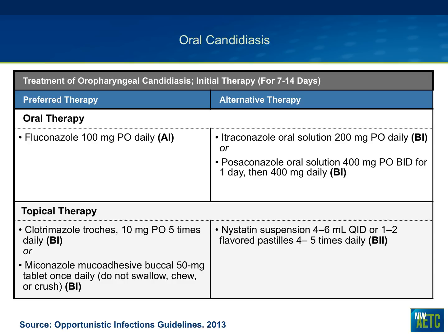In terms of therapy for oral candidiasis, the first-line therapy recommended in the opportunistic infection guidelines is once-daily fluconazole. Alternatives are itraconazole oral solution or posaconazole oral solution. Topical therapies can also be used — clotrimazole, miconazole, nystatin — but most guidelines and experts have moved towards just using fluconazole as first-line therapy. It used to be that we were very hesitant to overuse fluconazole because of concerns about developing fluconazole-resistant candidiasis, but this issue has moved more into the background as we see less candidiasis and fewer people needing chronic therapy.